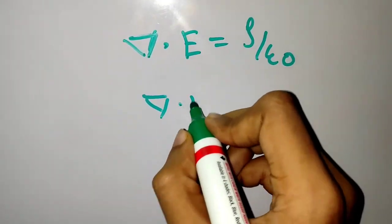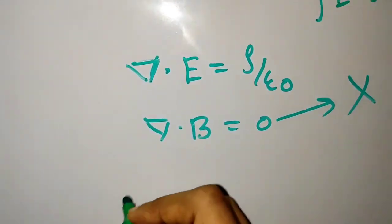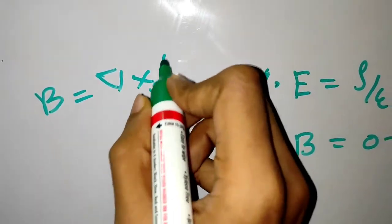The next one is divergence of B equals zero. There are no magnetic monopoles. This also helps in writing B in terms of the vector potential, that is curl of A.